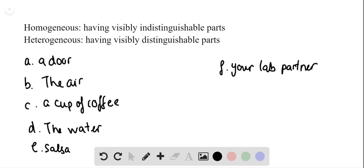All right, so what are the differences between homogeneous and heterogeneous? Homogeneous: having visibly indistinguishable parts.